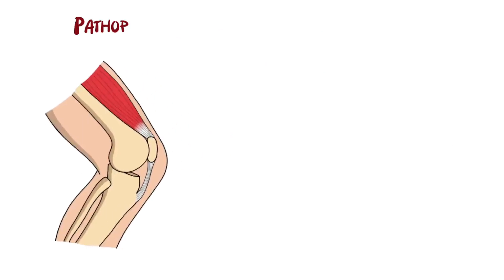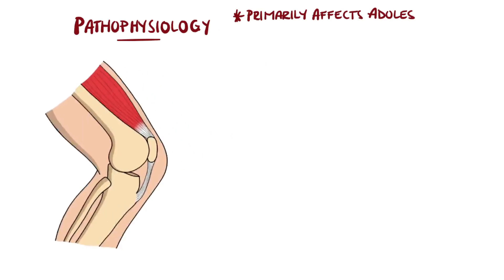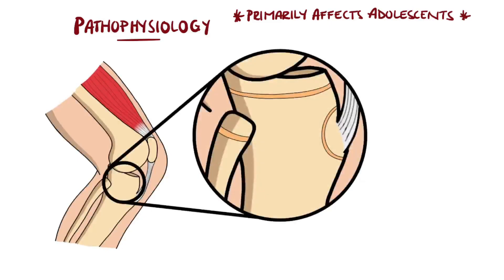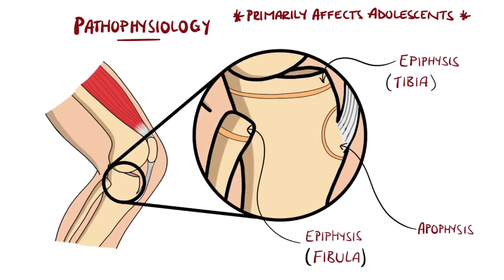It primarily affects children and adolescents because by adulthood the apophysis will fuse with the rest of the tibia. It is weaker than tendons and so is prone to injury.